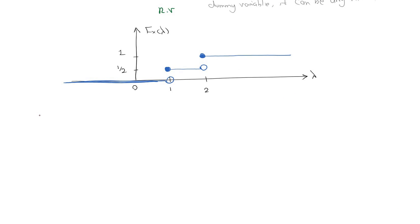Number 1 is that F of lambda is non-decreasing. Number 2, F of minus infinity equals 0. Number 3, F of positive infinity equals 1.